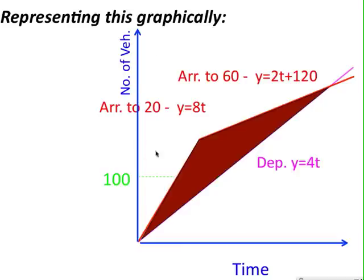The sum of all of the delays is equal to the area of this figure, and the average value is the area divided by the number of vehicles arriving.